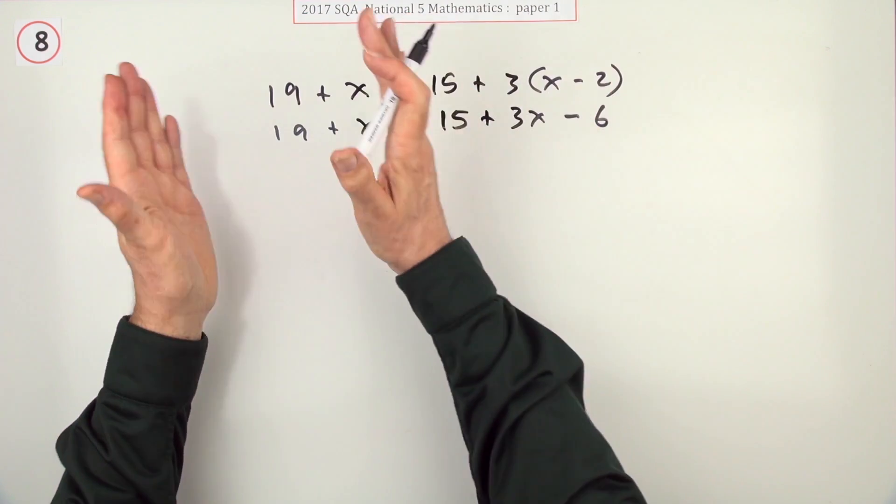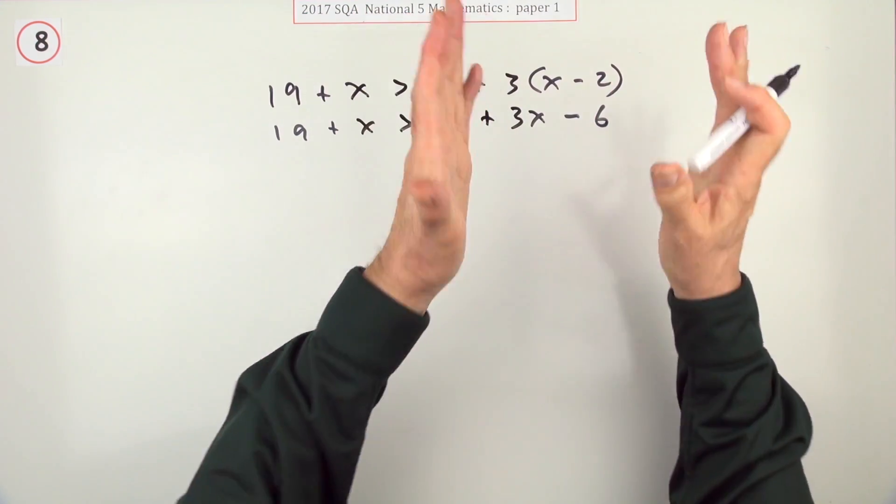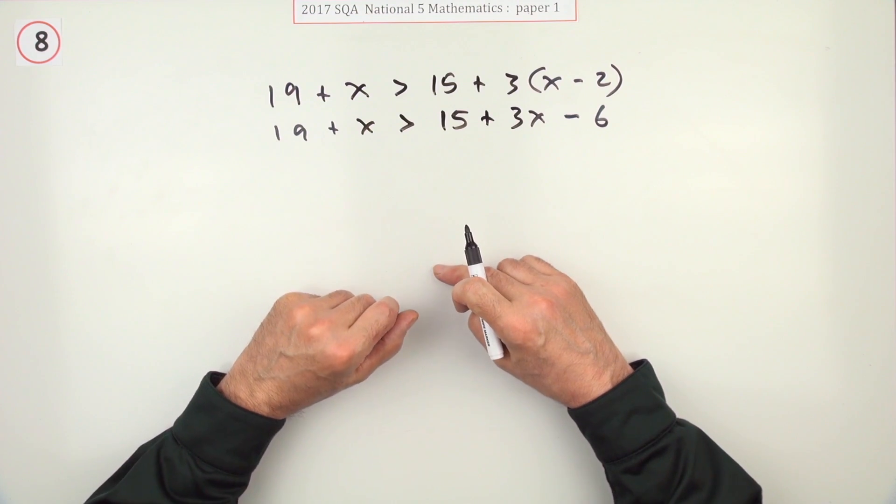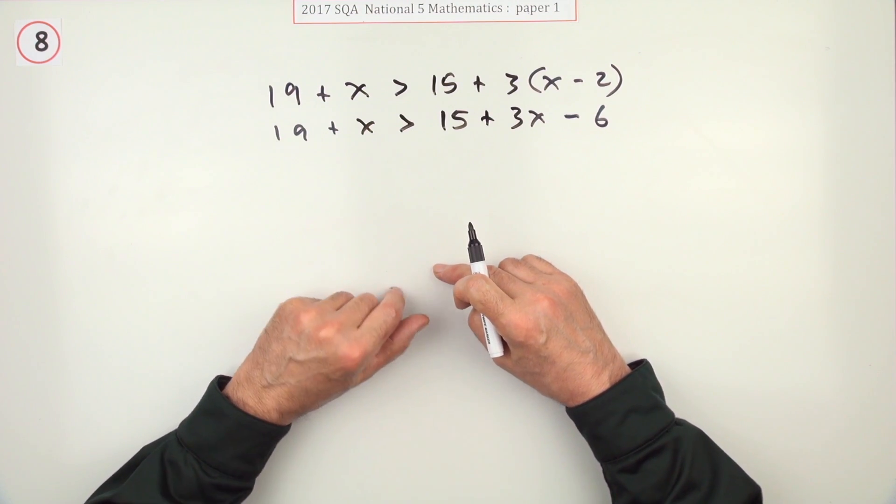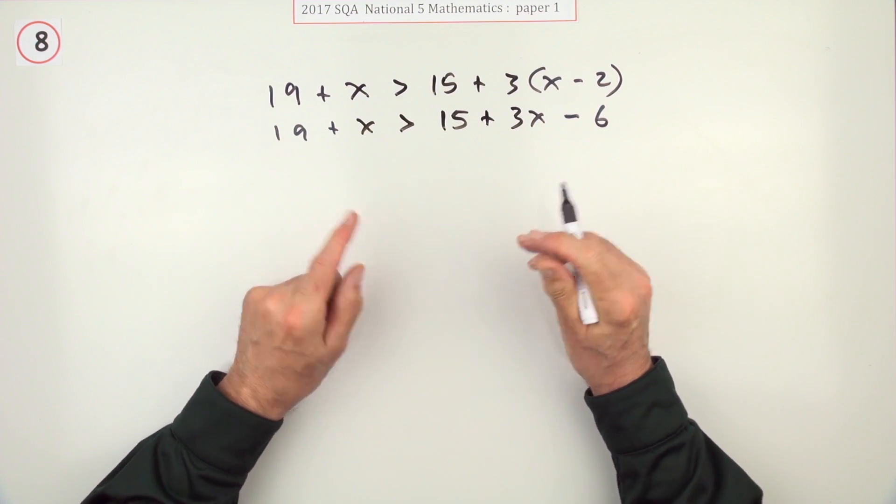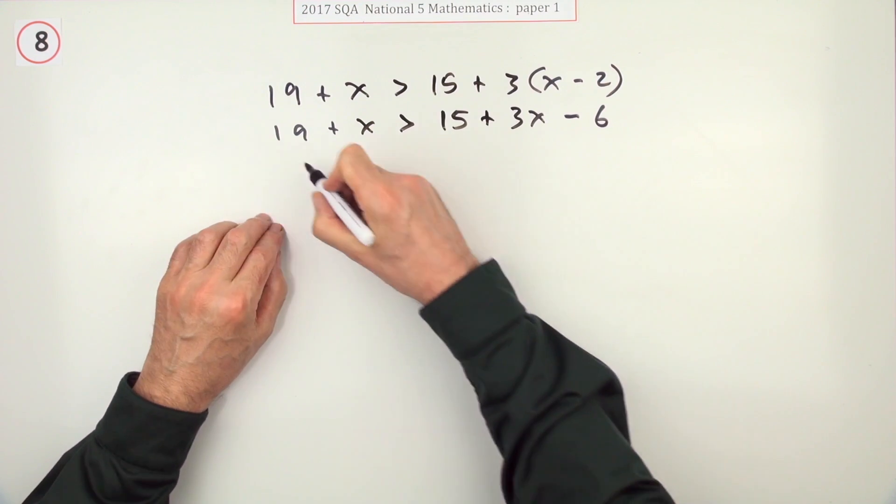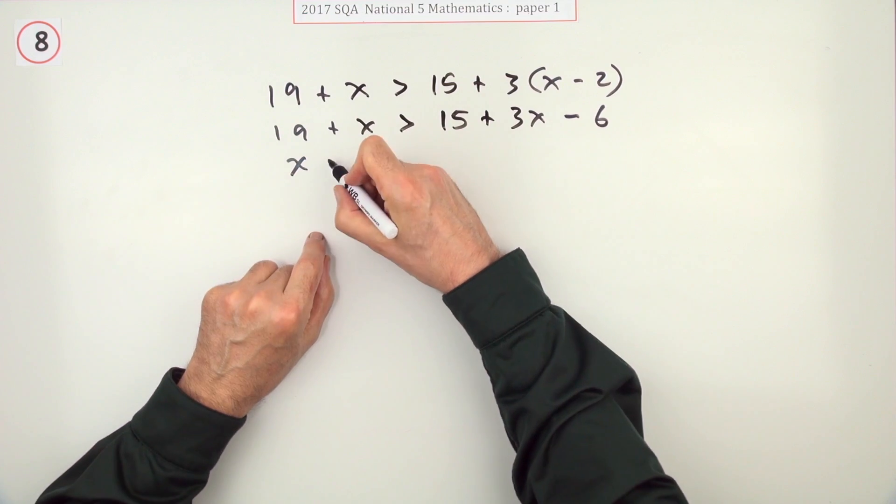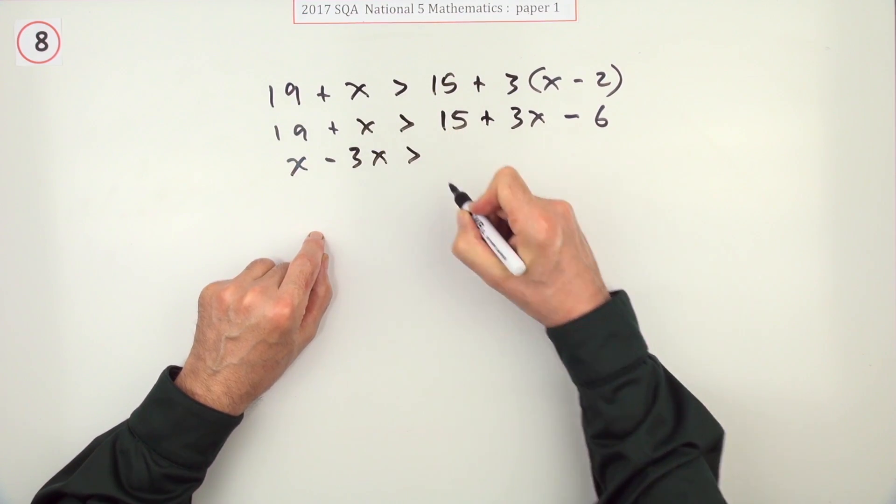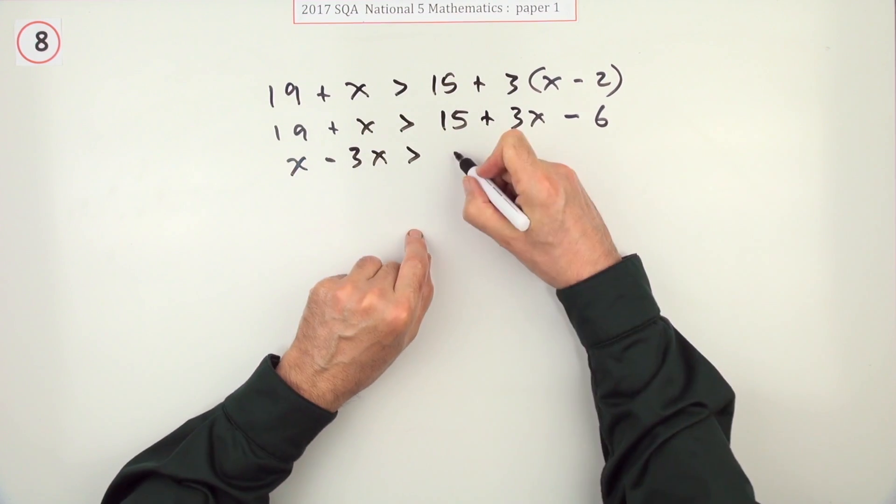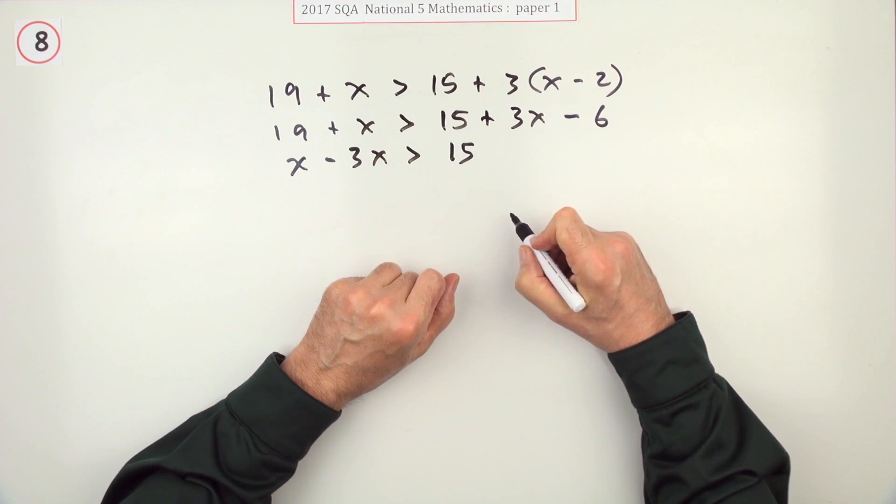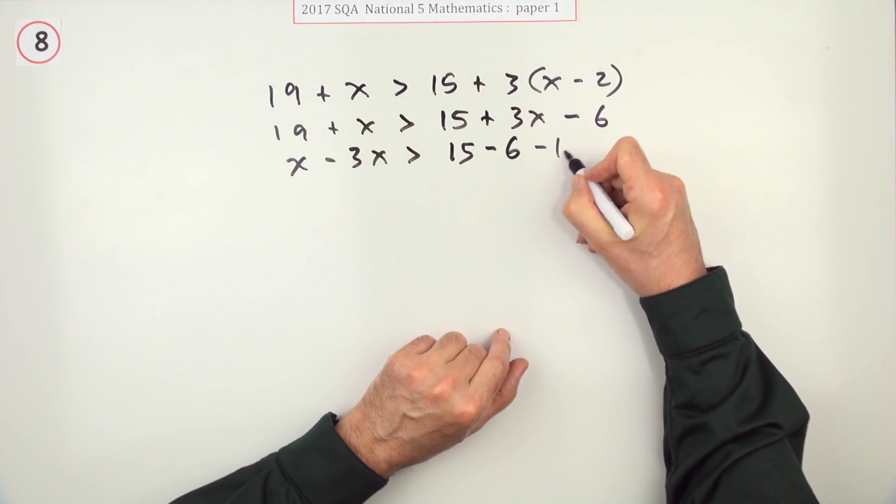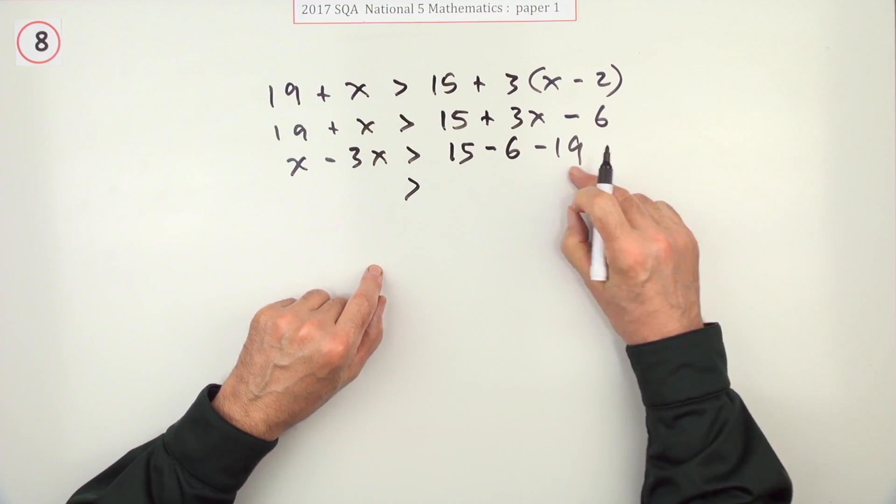Now you need to get the x's on one side and the numbers on the other. There are various things you could do. You could anticipate things going negative on you. But if you didn't, you probably would just have said, I'll keep my x's here. So that x stays. And this x will have to come over and join it as minus 3x. This is the side for the numbers. I'll keep the 15. This negative 6 was there already. And that 19 will have to come over as a minus 19.